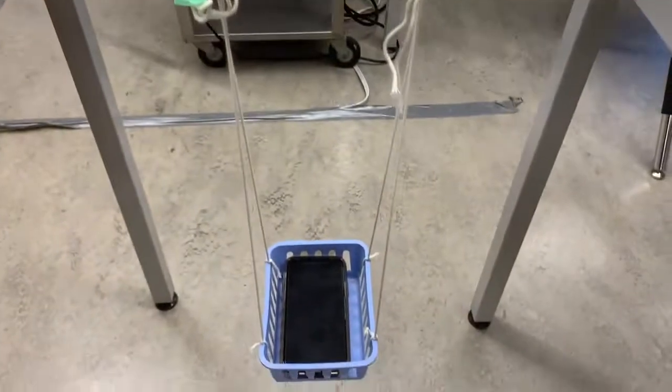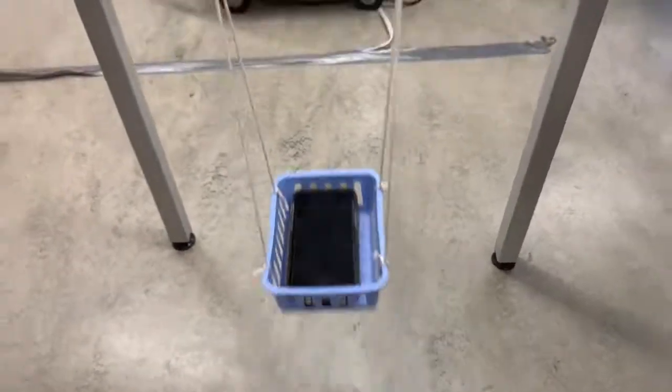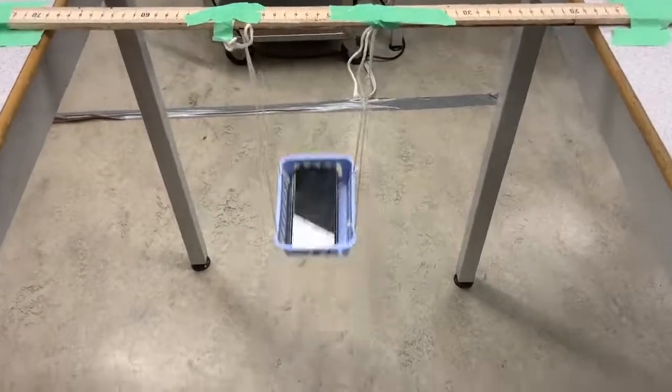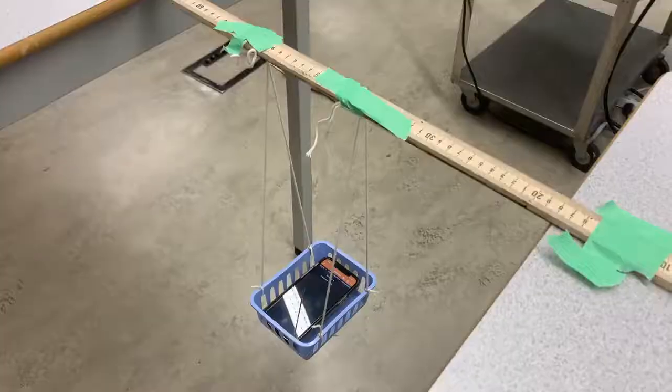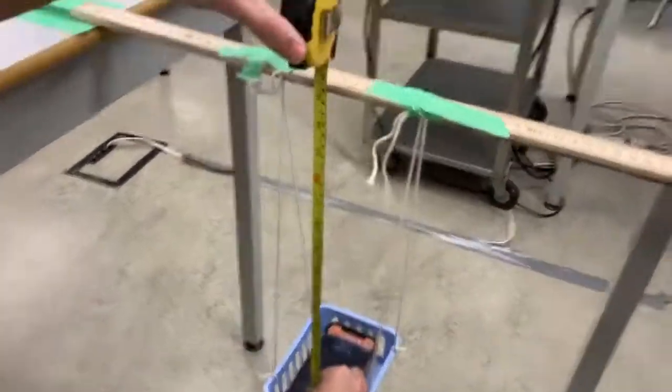To ensure that the phone doesn't spin during its oscillation, we decided to give the pendulum two pivot points. First, we placed the phone snugly into the basket. Then, we tied the basket up with yarn onto the meter stick as shown in the video, and applied tape on top to make it more sturdy.